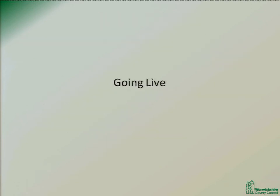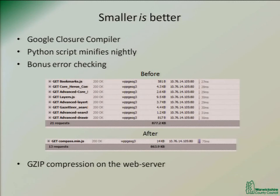Going live: smaller is better. We use the Google Closure Compiler to turn all of that into one minified JavaScript file — minified JavaScript basically being a bunch of gibberish to humans, but it works. It's not much smaller, but it's faster to load, and it has the bonus that the Google Closure Compiler actually has error checking which alerts us when someone has done something wrong.